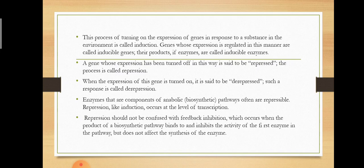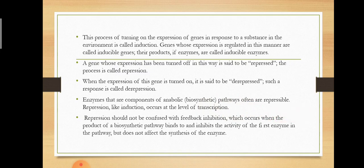For example, in bacteria, if ample supplies of tryptophan are present, it leads to repression. When expression of a gene is turned on again, it is said to be derepressed, and such a response is called derepression. Enzymes that are components of anabolic — that is, biosynthetic — pathways are often repressible.